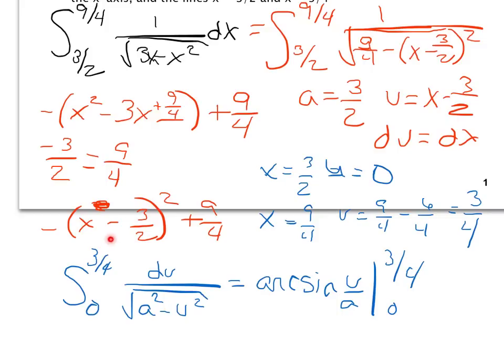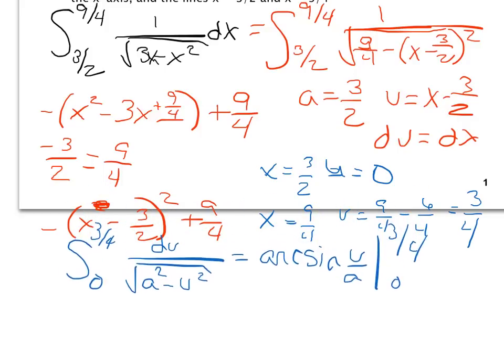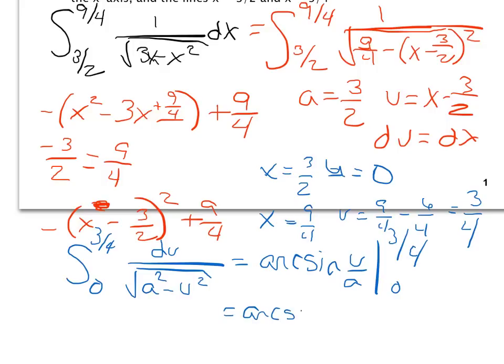Because I've already plugged in, or because I changed my limits to be in terms of u, I don't have to plug that x minus 3 over 2 back in for you. I can leave it as u. I am, however, going to have to plug 3 over 2 in for a. If I put a 3 over 2 underneath here, that's the same thing as saying 2 over 3. So I'm going to have arc sine of 2 over 3 u from 0 to 3 over 4. And now I need to plug each one in. So I will have arc sine of 2 over 3 times 3 over 4. I know my 3s cancel, and I know 2 and 4 reduce. So I end up with arc sine of 1 half minus arc sine of 0.